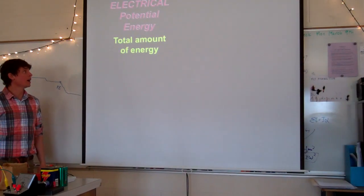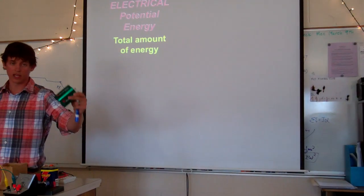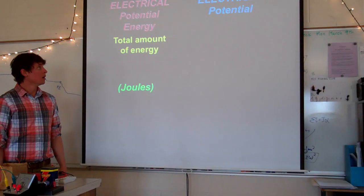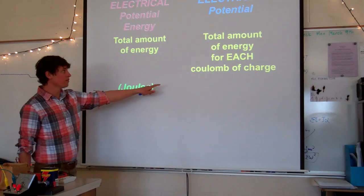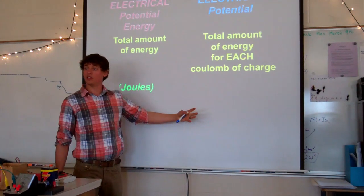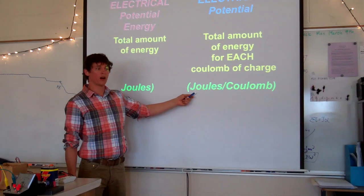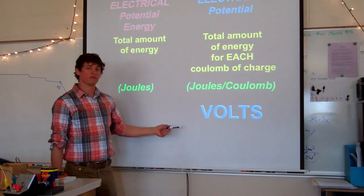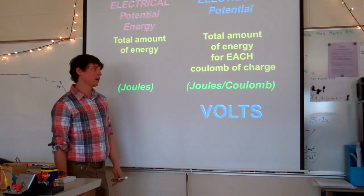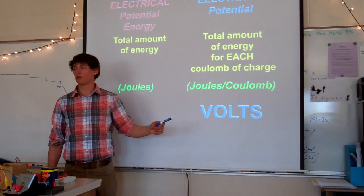Electric potential energy is the total amount of energy that is stored in something. So we could talk about the electric potential energy stored in this battery, and it's measured in joules. Electric potential is the total amount of energy for each coulomb of charge. Energy per unit charge. So we call this joules per coulomb. We actually call that volts.